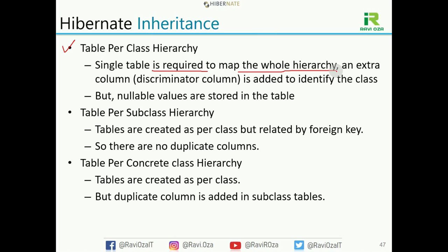The discriminator column is an extra column added to the table. The drawback or disadvantage is that nullable values are stored in the table — it will not prevent nullable values from being stored. Now the second strategy is table per subclass hierarchy. Tables are created as per the classes in the hierarchy and all tables are related to each other.